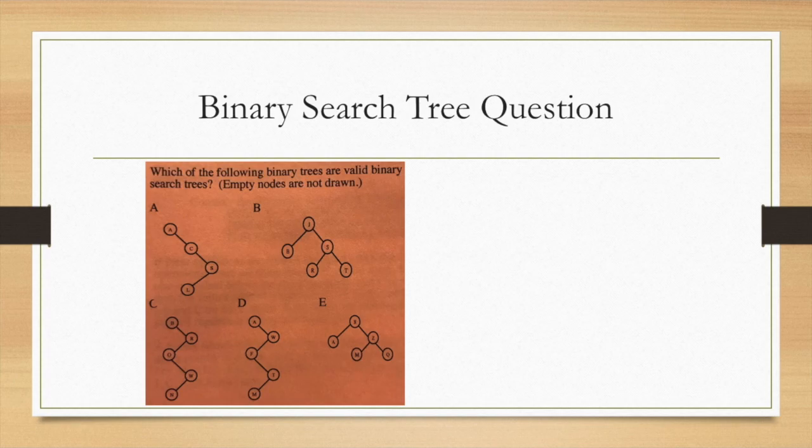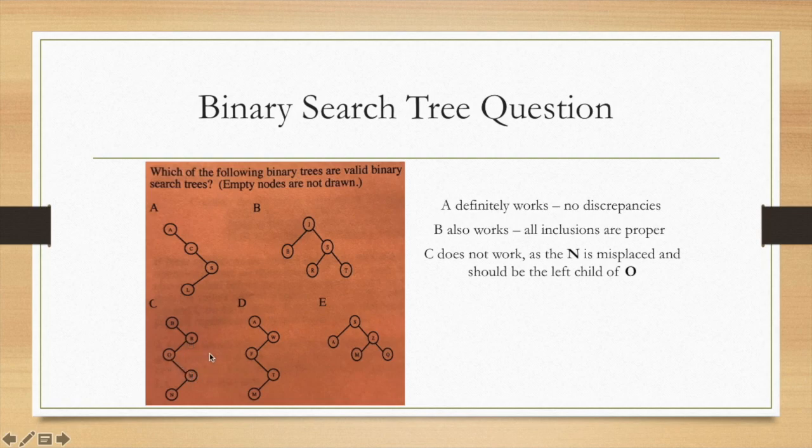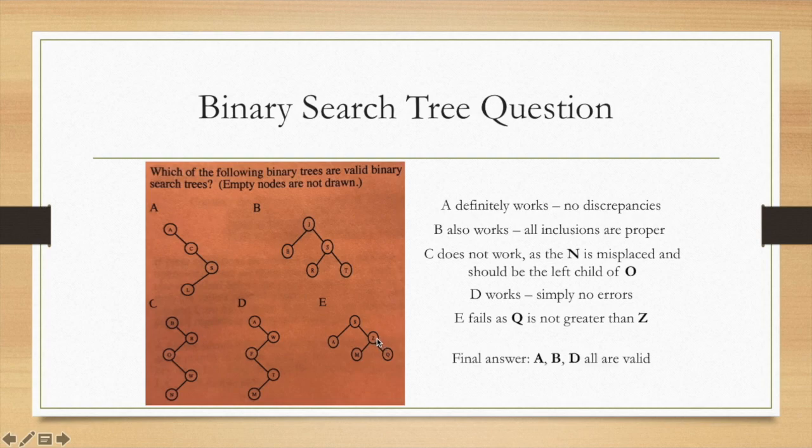Here we have which of the following binary trees are valid binary search trees. A definitely works. The C is greater than A, so it goes to the right. The S is greater than the C, so it goes to the right. The L is greater than A, greater than C, but not greater than S, so it goes to the left. B also works for similar reasons. You can kind of look at it and see why. But then C will not work because the N seems misplaced. R is correct, O is correct here. But this W should be to the right of the R, and the N should also obviously have been a left child of the O. D works. There's no errors there. And then E will also have an error because the S works. The A and Z are proper. The M looks good, but the Q is not greater than Z. So final answer is A, B, D are valid.